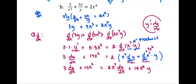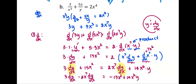At this step, we have terms involving dy by dx on both the left and the right. We collect all dy by dx terms on one side: 3 times dy by dx minus 2x to the seventh times dy by dx equals negative 15x squared plus 14x to the sixth times y. On the left-hand side, that becomes the quantity 3 minus 2x to the seventh, multiplied by dy by dx.